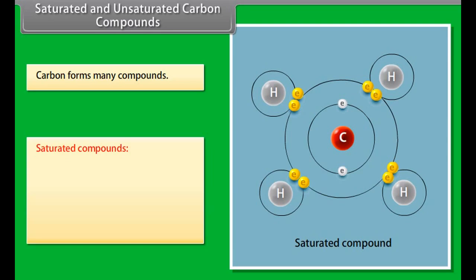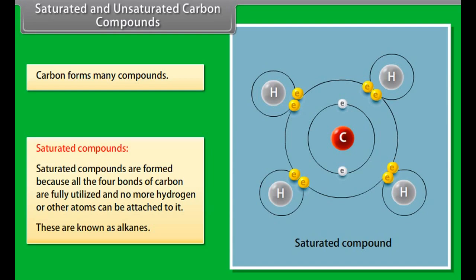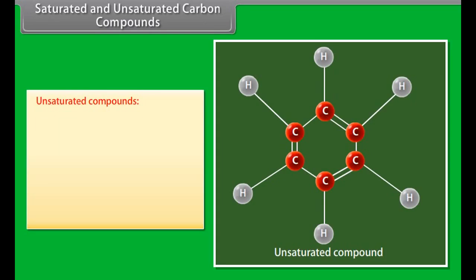Carbon forms many compounds. The two main types of compounds are saturated compounds and unsaturated compounds. Saturated compounds: The carbon and hydrogen compounds where the adjacent carbon atoms contain only one single covalent bond are known as saturated hydrocarbons. The reason for the formation of saturated hydrocarbons is because all the four bonds of carbon are fully utilized and no more hydrogen or other atoms can be attached to it. These are known as alkanes.